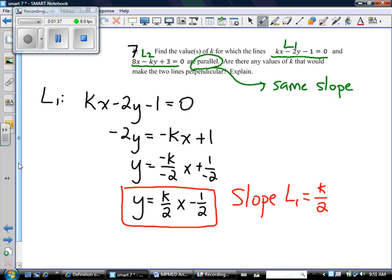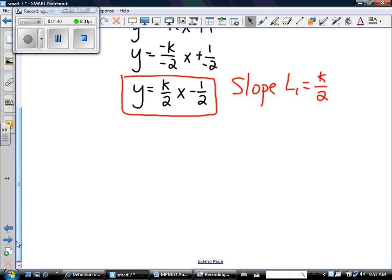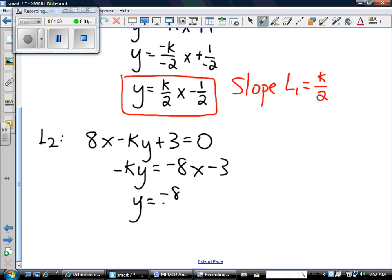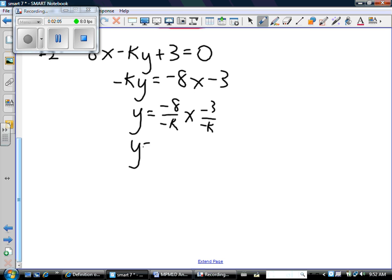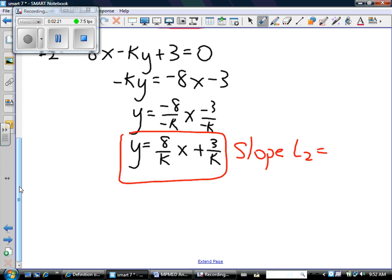We'll leave line 1 for a minute, and let's talk about line 2. Line 2 is 8x minus ky plus 3 equals 0. I need the slope, so I'll isolate the y term. Subtract 8x, subtract 3. I need to divide everything by negative k, thinking about k just like it's a number. And then cleaning up my math, I have y equals 8 over k times x plus 3 over k. So I've rearranged line 2. All I really needed was the slope. So the slope of line 2 is 8 over k.